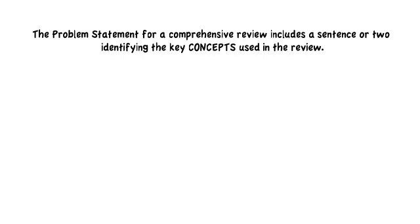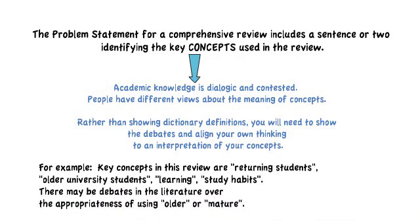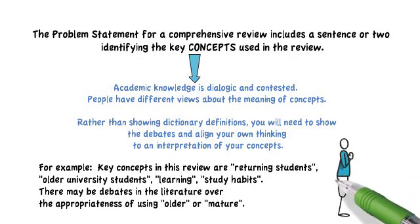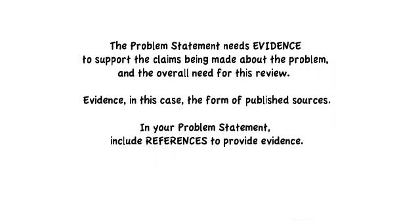The problem statement for a comprehensive review also includes a sentence or two identifying the key concepts used in the review. Academic knowledge is dialogic and contested — people have different views about the meanings of concepts. Rather than showing dictionary definitions, which implies there is one definition, you want to show debates and align yourself with particular interpretations. For example, key concepts might be returning students, older university students, learning, and study habits. You may need to address whether it's appropriate to use the term 'older' or 'mature.'